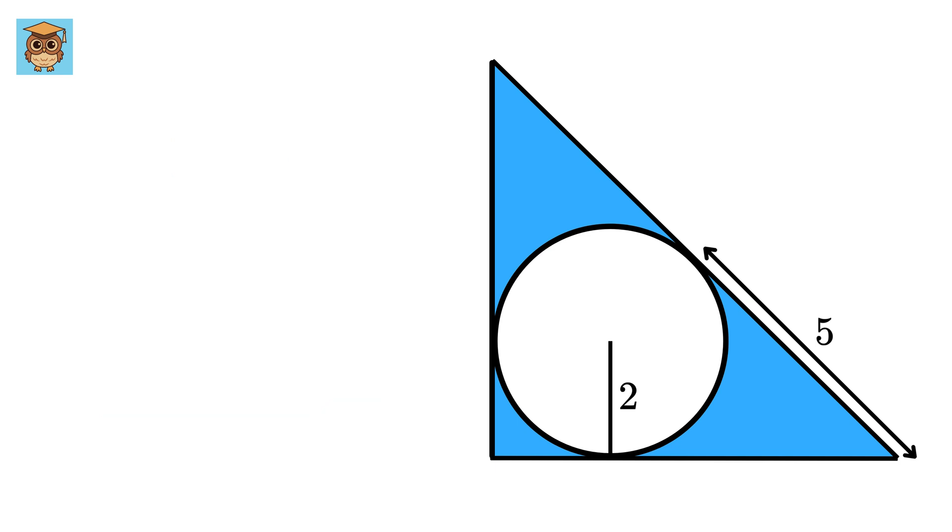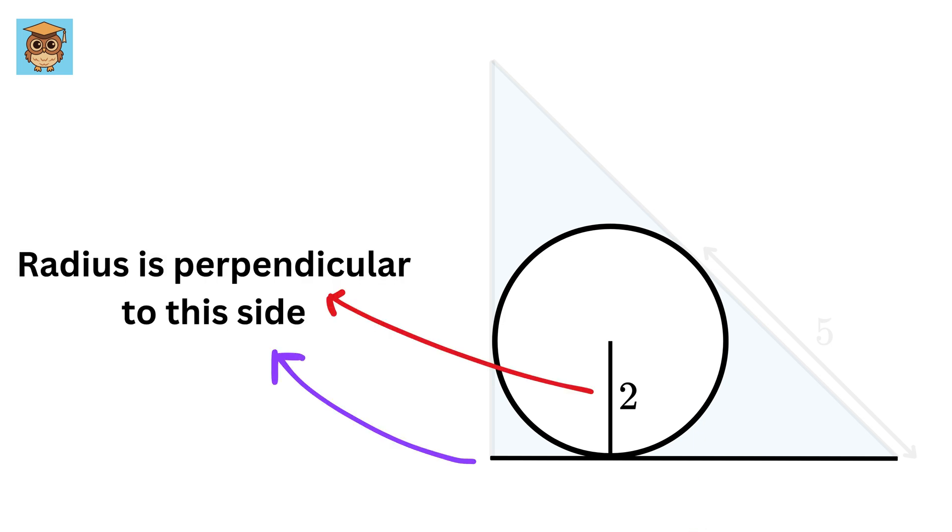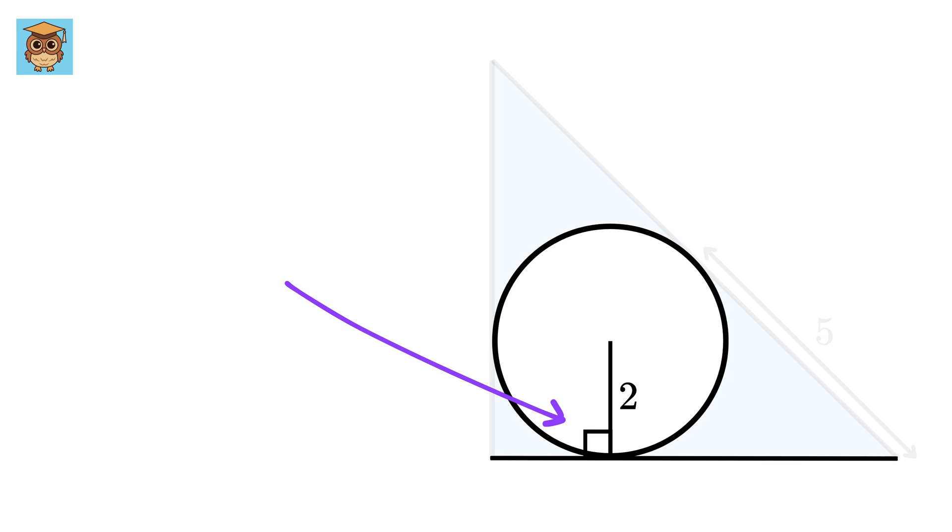Okay, so first thing first, since this side of the triangle is tangent to this circle, this radius will be perpendicular to this side, so this will be 90 degrees. Now draw this radius. It will also be perpendicular to this side of the triangle, as it is also tangent to this circle.